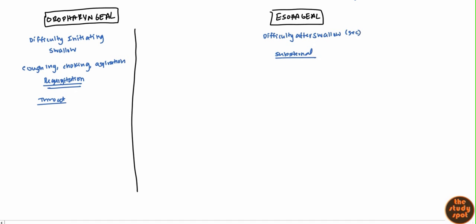Let's talk about the conditions in the oropharyngeal area, starting with the oral area. When we're talking about oral, we're primarily talking about mastication. Anything that affects mastication can affect the oral phase of swallowing. Mastication is a well-coordinated process, so you want to think of the cranial nerves that affect it — the trigeminal, the facial nerve, and the hypoglossal nerve. If you have a problem with these nerves, either peripherally or centrally such as in a CVA, you would have oropharyngeal dysphagia. Another issue in this oral phase is low saliva, which is classic of Sjögren's syndrome.